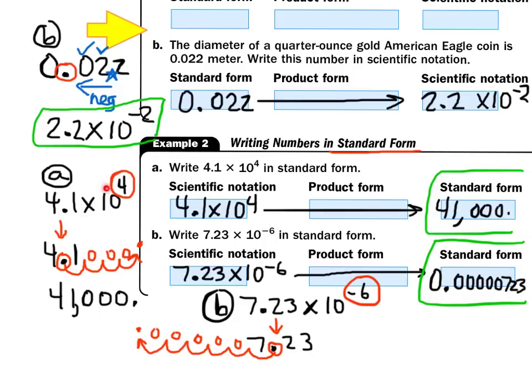The positive 4 tells you to move the decimal four places to the right. So grab the decimal point and move it 1, 2, 3, 4 places to the right, and put the decimal at the end. Think of the loops as little swings at the park. The first swing has the number 1 in it, so you can't add a zero. But the three empty swings should get little zeros. So written out, this gives you 41,000 — that's the standard form.